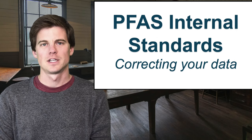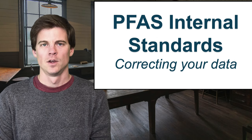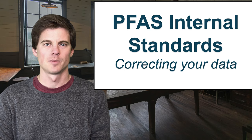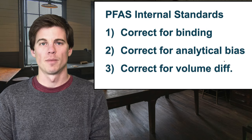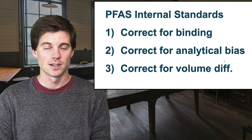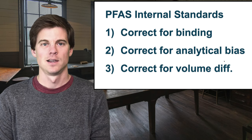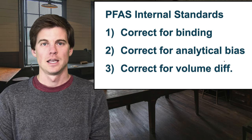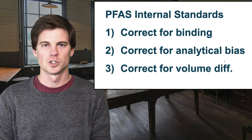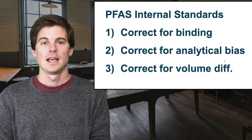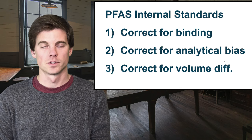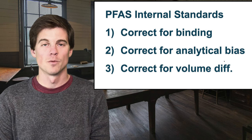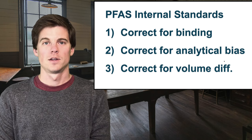So, PFAS internal standards — correcting your data. This is to achieve the highest quality data and to eliminate a few of the biases you would see with this type of analysis. The three things they correct for: binding — PFAS tend to bind to things like plastic and glass, and internal standards will too, so we correct for that. They also correct for other analytical bias such as instrument response, changes in temperatures or pressures, and correction for differences in volumes. If your volumes or pipetting is slightly off, internal standards will correct for that because they will be off by the same degree as your analytes.